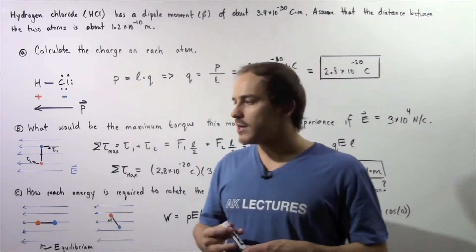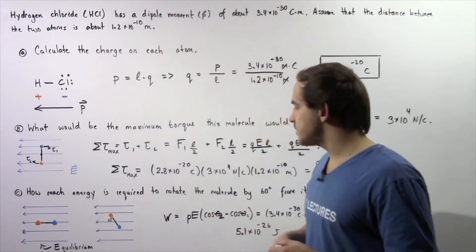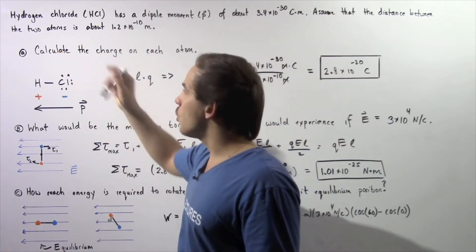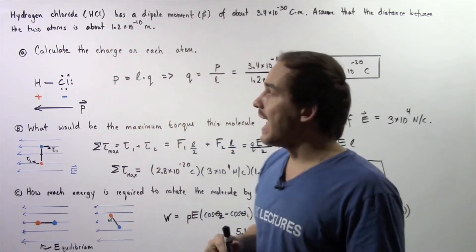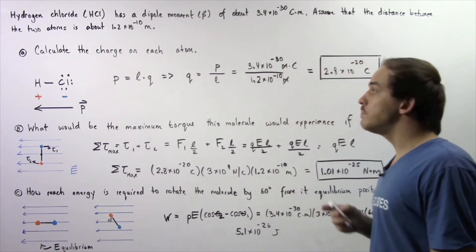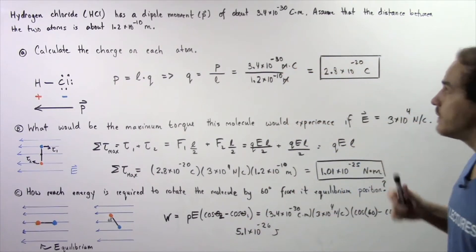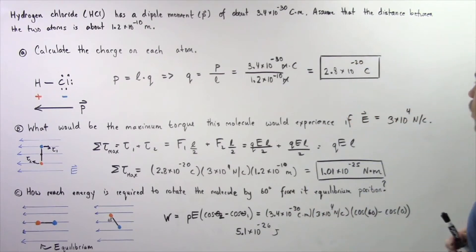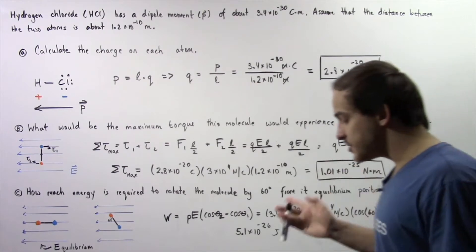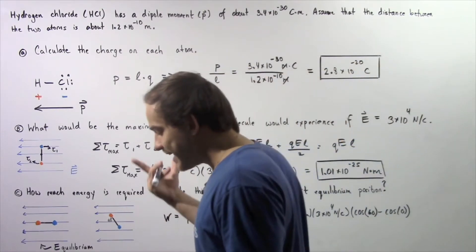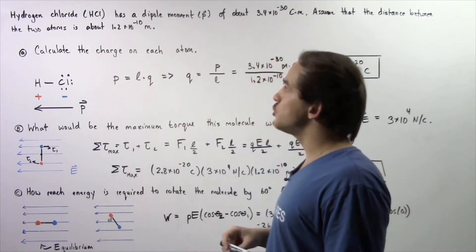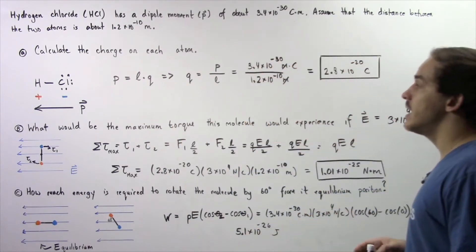Let's continue our discussion on electric dipole moments and look at the following example. Hydrogen chloride, given by the formula HCl, has a dipole moment of about 3.4 times 10 to the negative 30 coulombs multiplied by meters. Assume that the distance between the two atoms within a single HCl molecule is about 1.2 times 10 to the negative 10 meters.